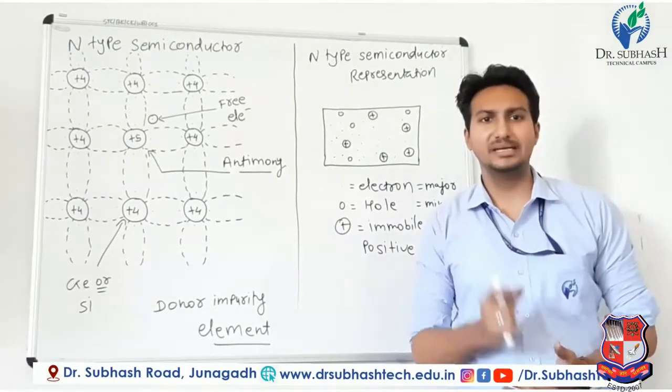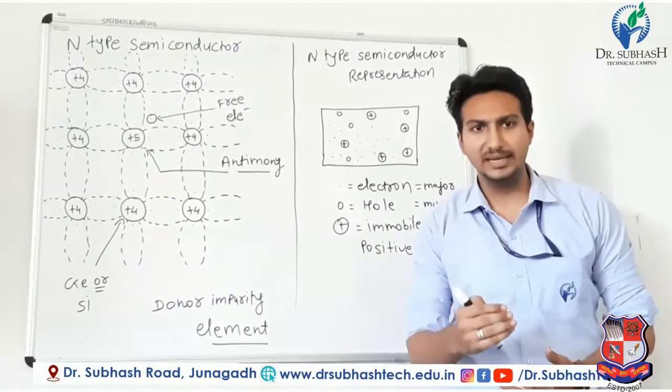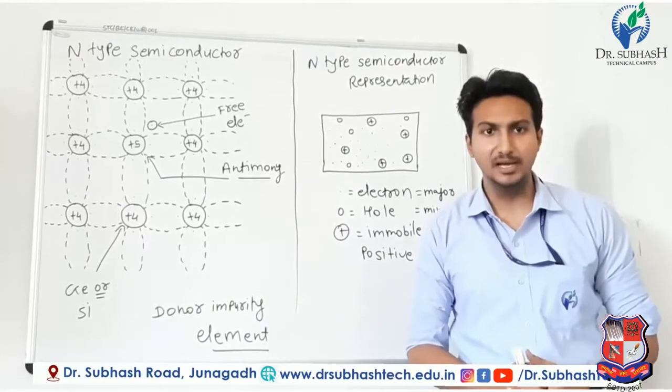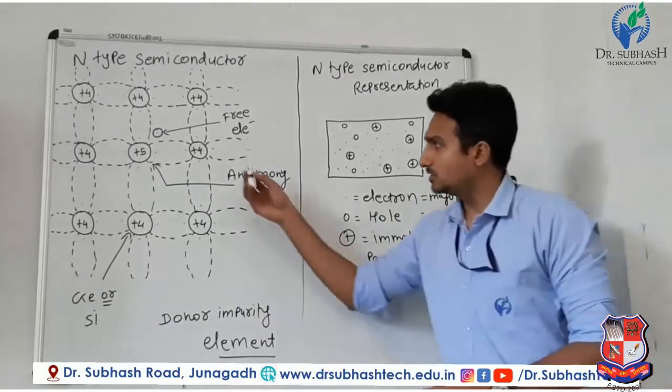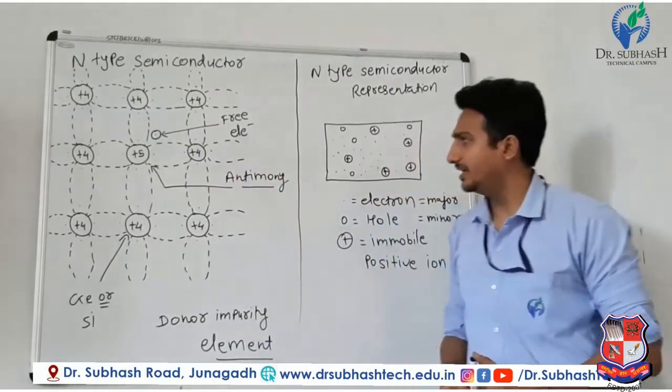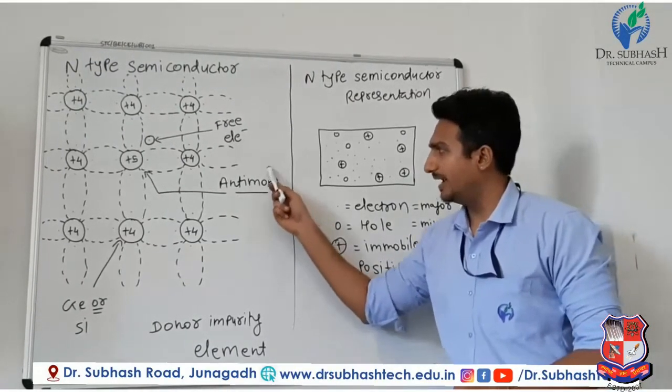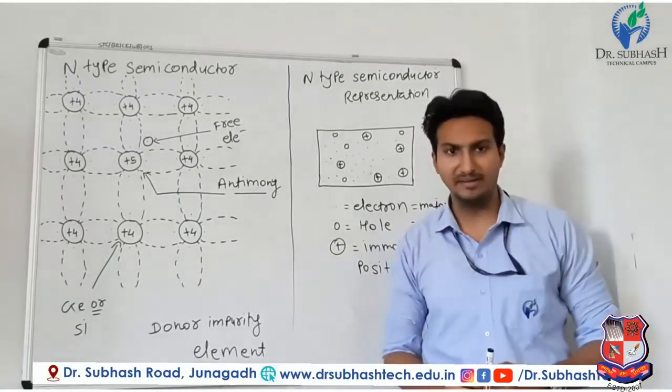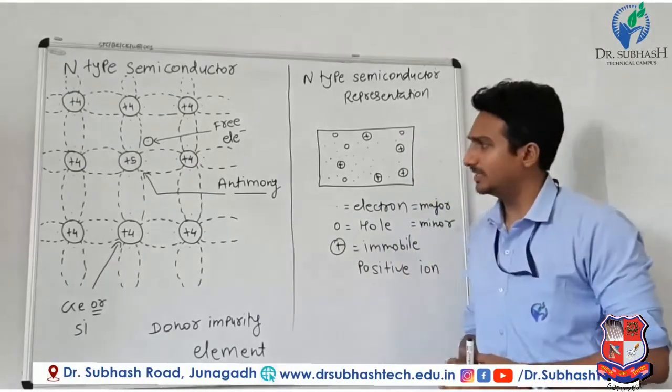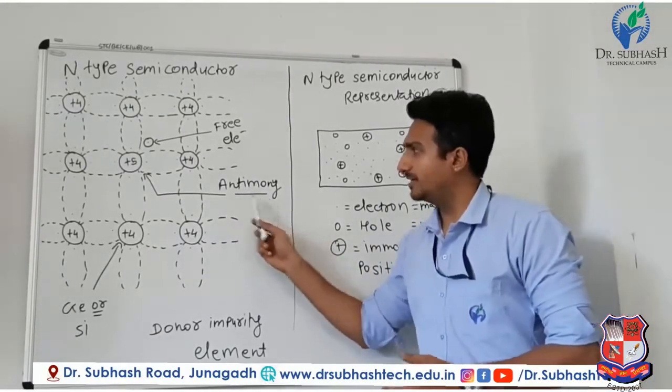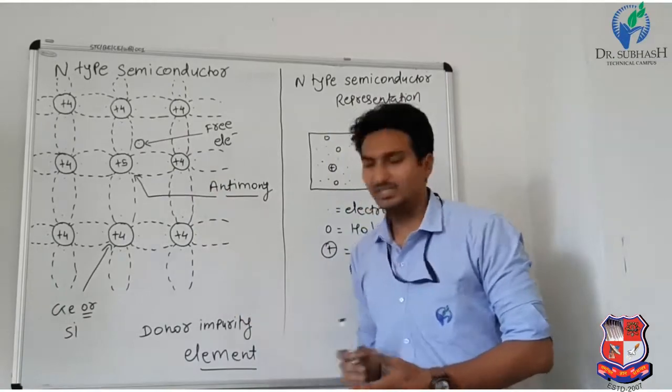The crystal structure of silicon is shown in this figure. When we dope silicon with antimony, we can get N-type semiconductor. Antimony's most outer orbit has 5 valence electrons, while silicon has 4 valence electrons.